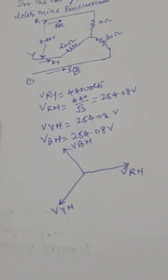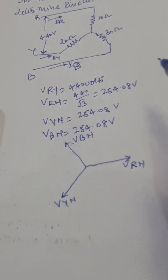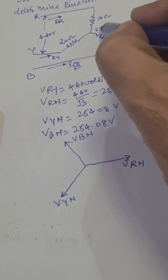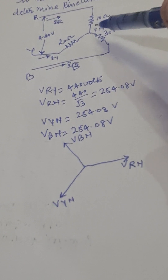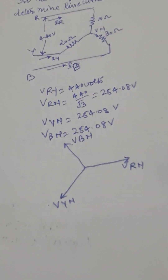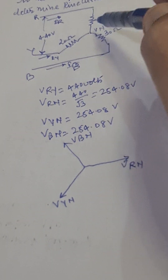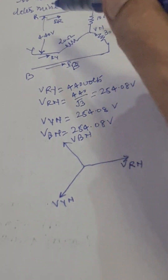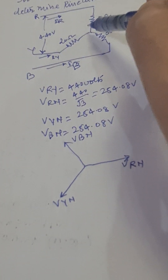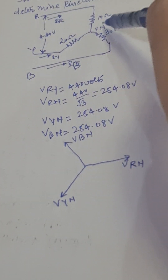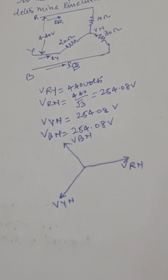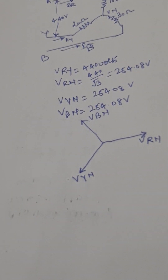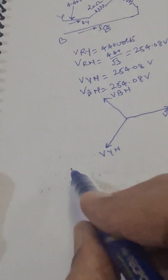If this load is unbalanced, then the neutral voltage VN will not be equal to zero. Had this load been balanced, VN would have been zero and we could straightforwardly calculate the line current as VRN divided by the load impedance. But here the neutral voltage is not zero, so we will first calculate the neutral voltage and then find out the line currents.